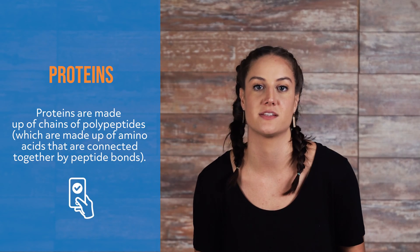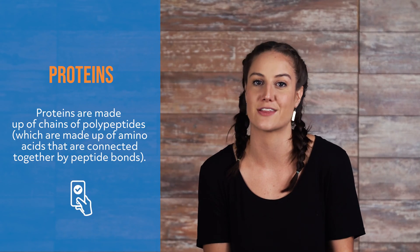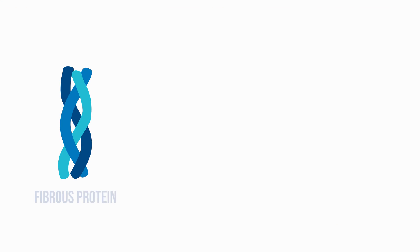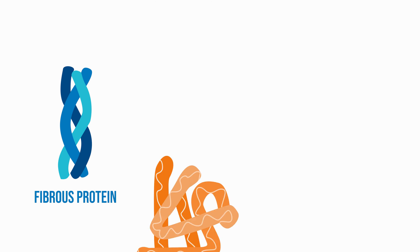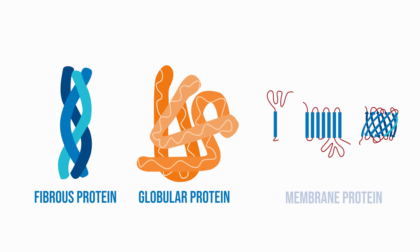Proteins are the most structurally complex biological molecules. Proteins are made up of chains of polypeptides, which are made up of amino acids connected together by peptide bonds. There are three types of proteins: fibrous proteins, which are structural; globular proteins, which are functional proteins; and membrane proteins, which are interactive.